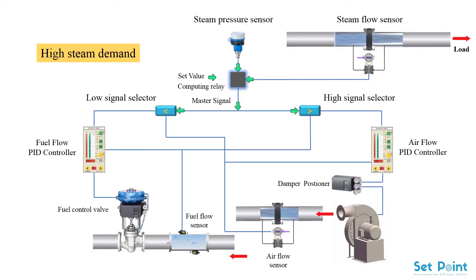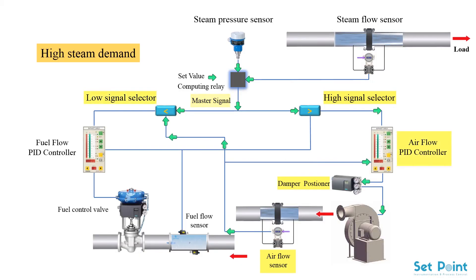When the steam demand is high, the high signal selector passes the master signal to the air flow controller. The air flow controller increases the air flow by adjusting the damper position. As the air flow increases, the air flow sensor transmits the signal to the low signal selector and the air flow controller. The master signal then passes to the fuel flow controller to increase the flow of fuel by adjusting the fuel flow valve position.